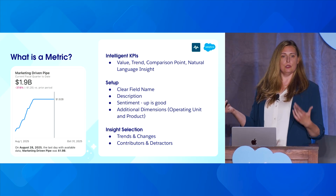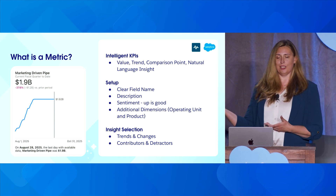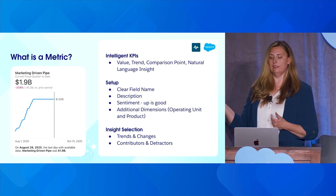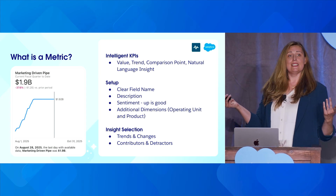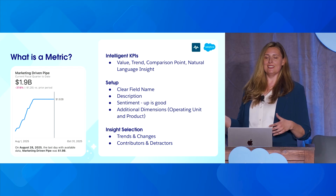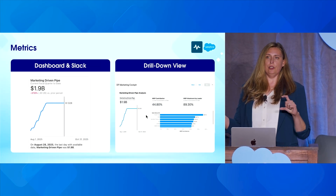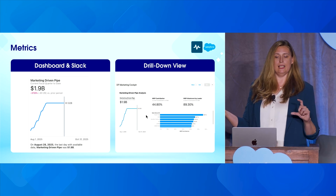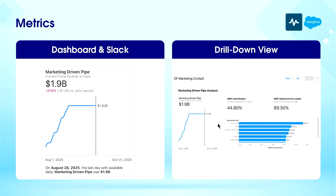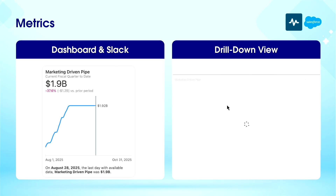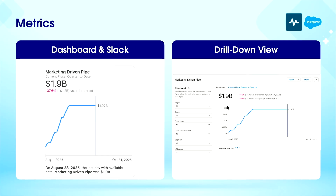We can associate different attributes and dimensions to a metric. Here's our marketing-driven pipe metric — I've associated operating unit and product to it. Then I can set insights, so if I want to know about changes in trends or top contributors, I can use my metric to find that. Once built in the semantic model, it can be used by anyone with access. You build it once, and it can be added into multiple dashboards, embedded in Slack, and users can drill in and filter for more insights.